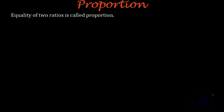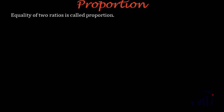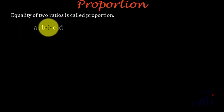Hi, in this video we are going to learn about proportion and what is proportion. As it is defined, equality of two ratios is called proportion. So suppose if we have two ratios, A is to B and C is to D, and if they are equal, they are called in proportion.